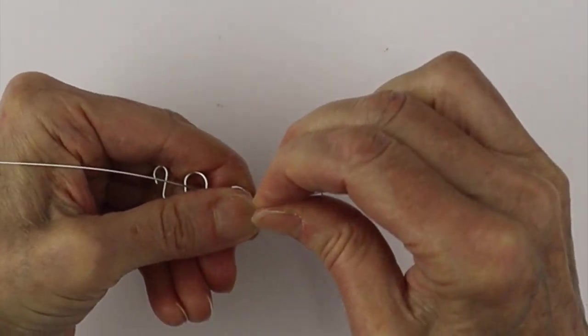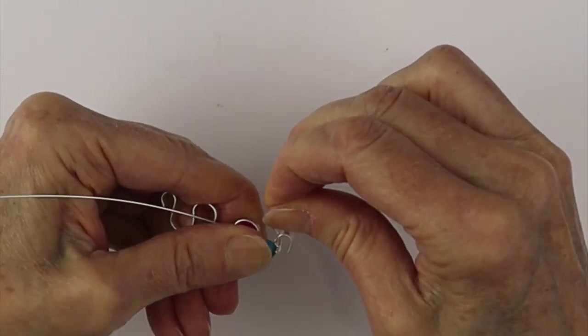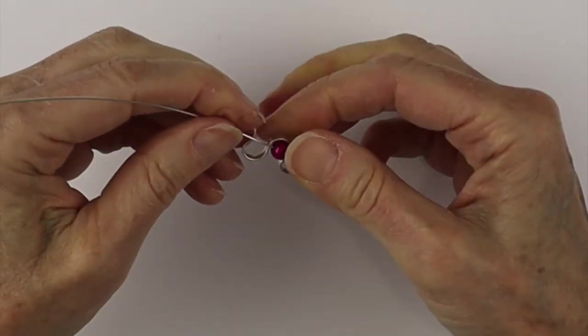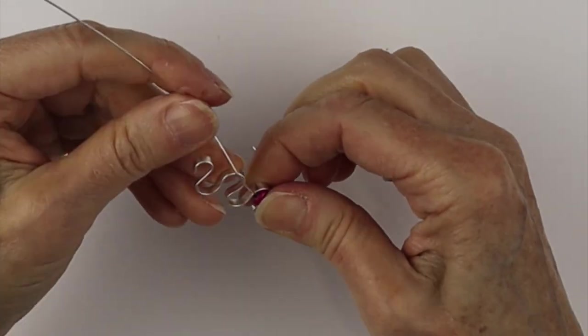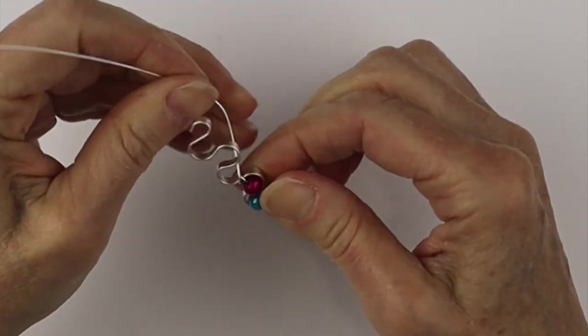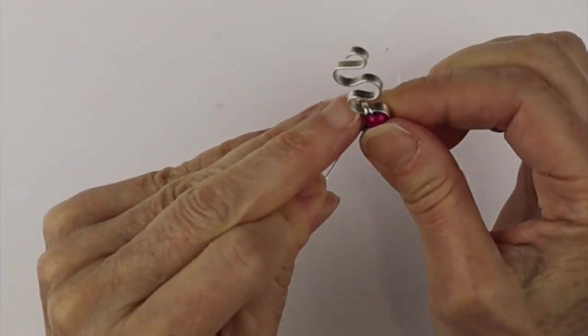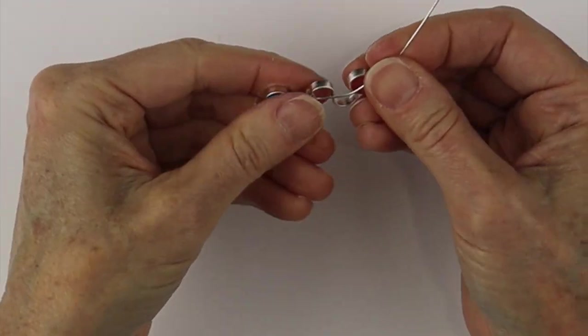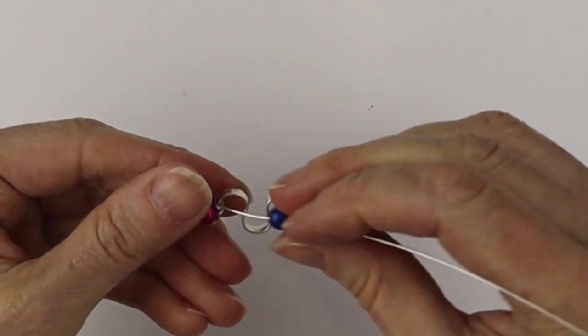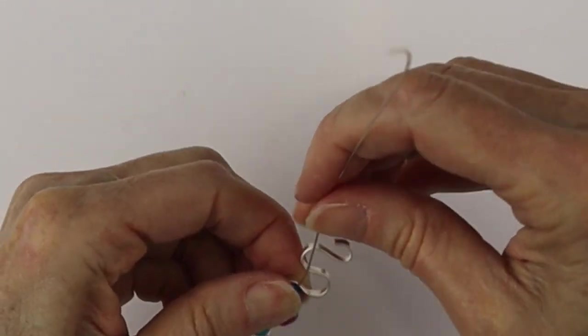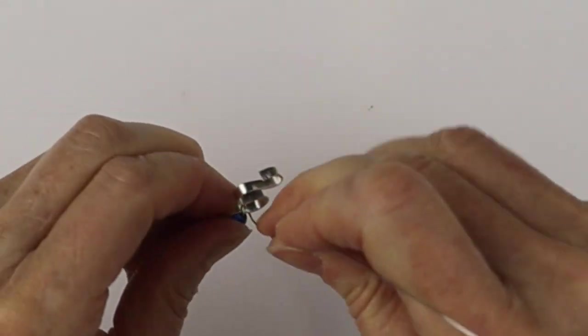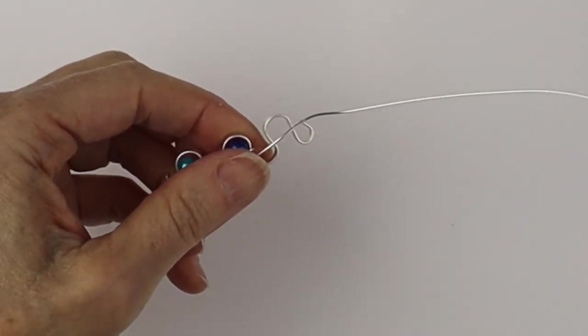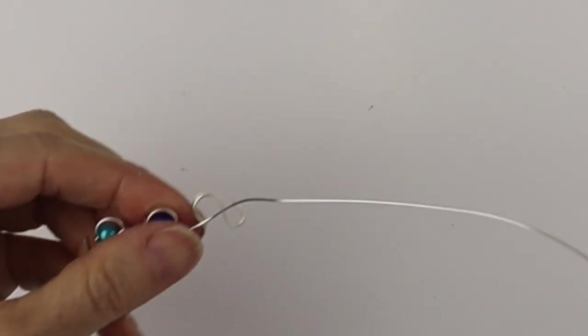Once that one's in place, we're going to wind it around a couple of times into the bottom loop. We're just going to keep going with this until we have beads in each of the sections, again using the six millimeter miracle beads. Put on another one and wind it around, then stick another bead on there.